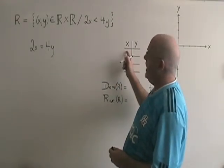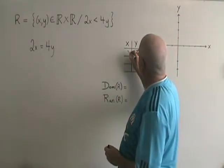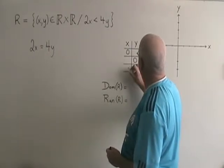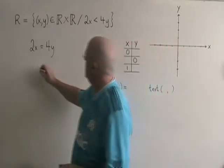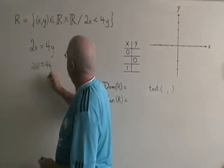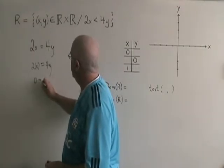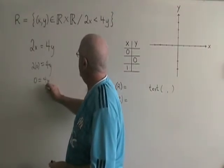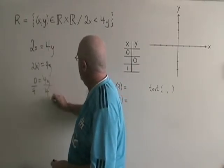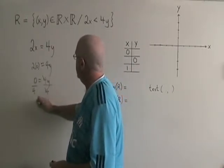And now I'm going to do a table of values. I'm going to find the intercepts and one other point. If x is 0, 2 times 0 equals 4y. This simplifies to give 0 equals 4y. And when I divide both sides by 4, I get y equals 0.